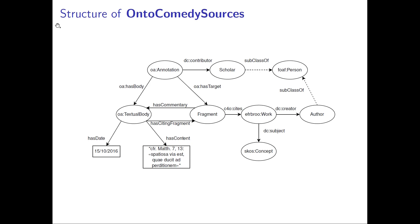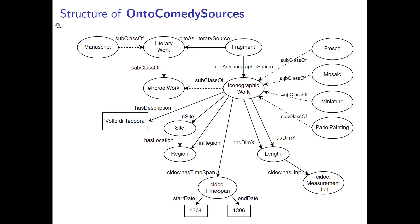The instances of the class work are the literary and iconographic sources we are interested in, while the class concept is used to specify the thematic area of the related work. As illustrated in this slide, the class work is a superclass of both literary work and iconographic work. Besides, literary work contains the class manuscript, while iconographic work is a superclass of the four classes fresco, mosaic, miniature and panel painting.